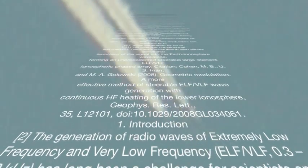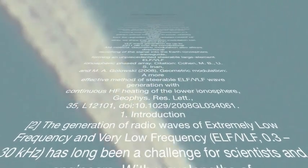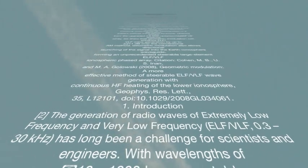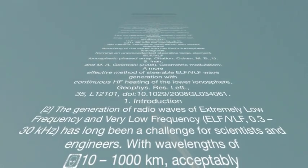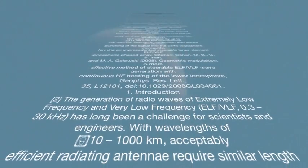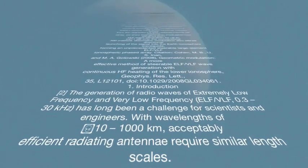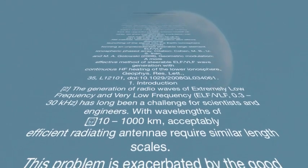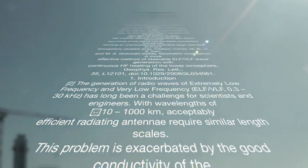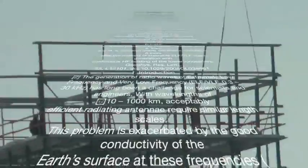HF heating of the lower ionosphere in the presence of natural currents constitutes one of the few effective means of ELF/VLF wave generation, and thus has remained the subject of active research since the first demonstration by Getmantsev et al., 1974. The ionospheric observatories near Arecibo, Puerto Rico (Ferraro et al., 1982) and Jicamarca, Peru (London et al., 1984) generated weak ELF signals utilizing the equatorial dynamo current. High-latitude facilities utilizing the auroral electrojet have generated stronger ELF/VLF signals.